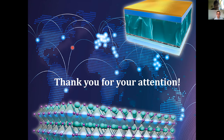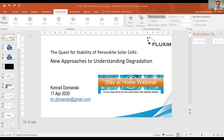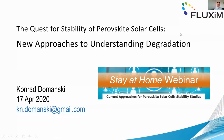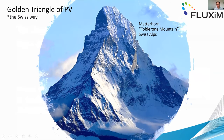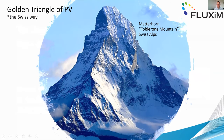My name is Conrad Domanski and I will talk about new approaches to understanding stability of perovskite solar cells. I often like to start with an analogy: research into photovoltaics is a little bit like climbing the Matterhorn. When you look at the mountain from Zermatt you see three ways to the top — the east face, the Hörnli ridge, and the north face. The Hörnli ridge is like research into efficiency — the most obvious, easiest, and historically first climbed.